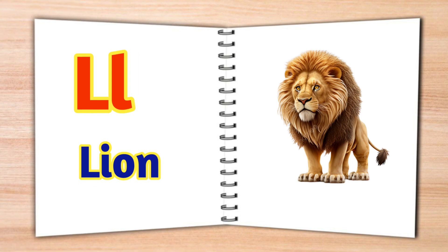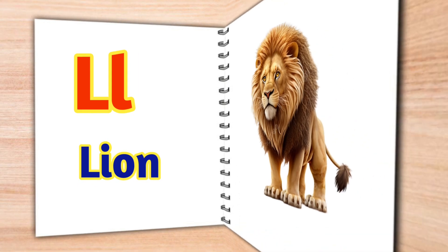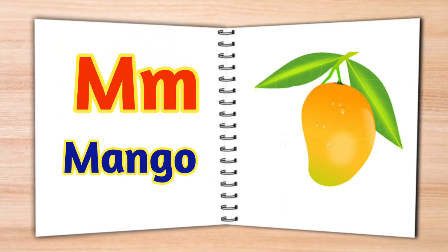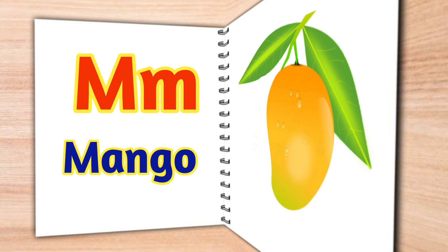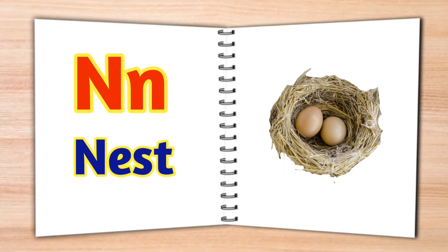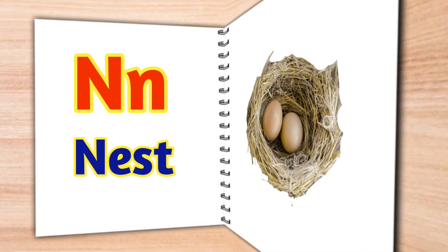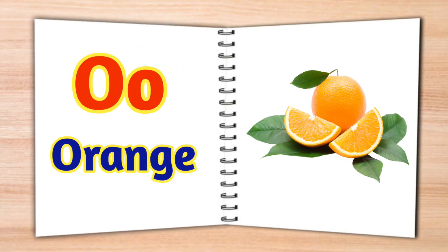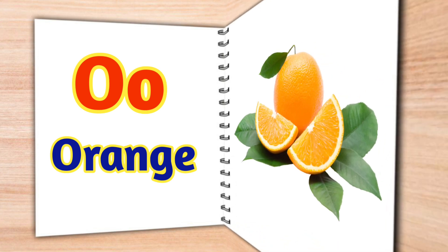K for kite, L for lion, M for mango, N for nest, O for orange.